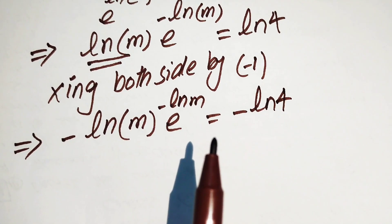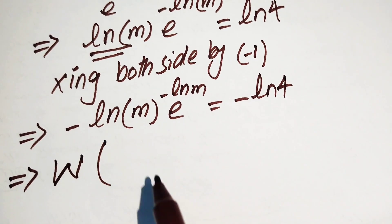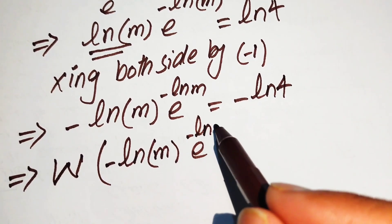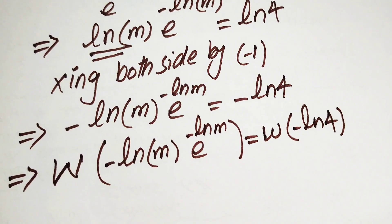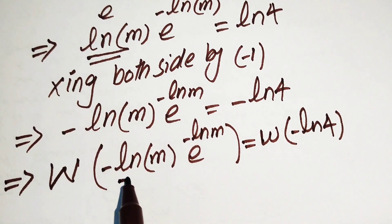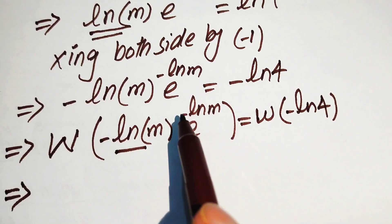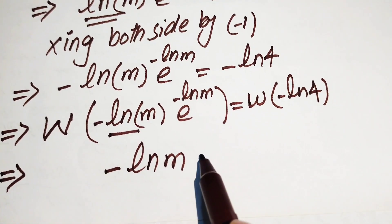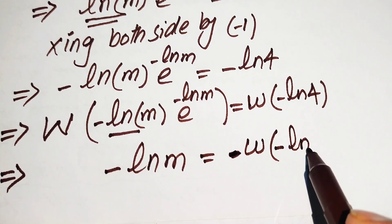Now we apply the Lambert W function on both sides. We write W of minus log m times e to the power of minus log m equals W of minus log 4. On the left hand side, the exponent of e is minus log m, and it is multiplied by itself, which is the standard form of the Lambert W function. So the output is the exponent: minus log m equals W of minus log 4.